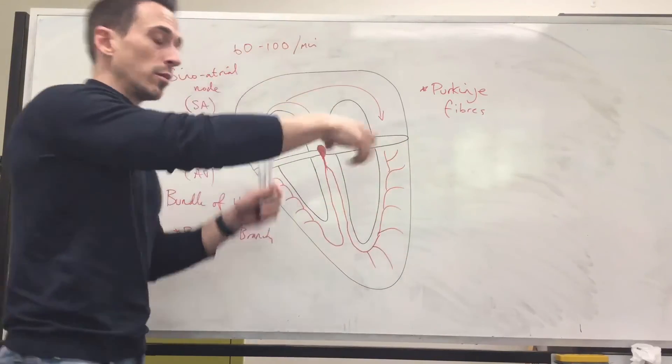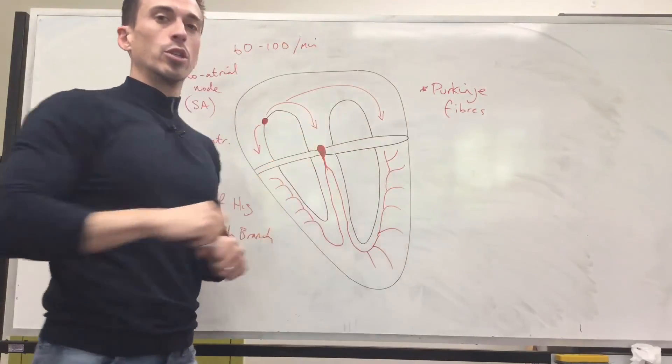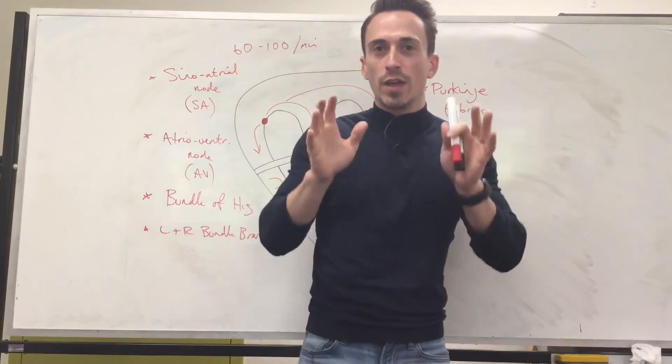And then through the Purkinje fibers that send that signal to the myocardium of the ventricles. So calcium can jump in and those ventricles contract. So this is the neural conduction of the heart.